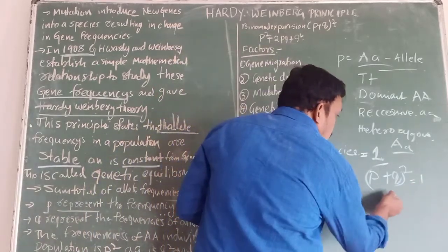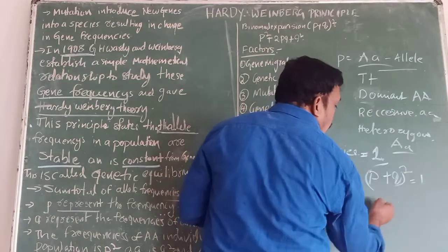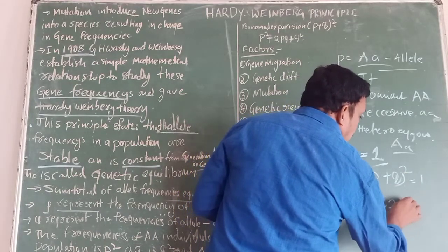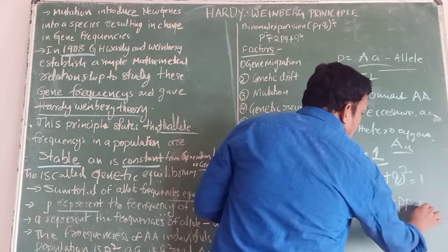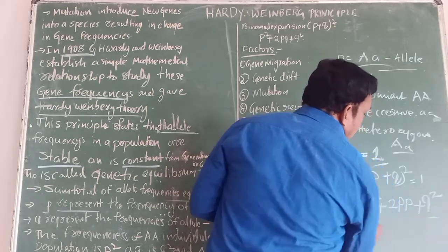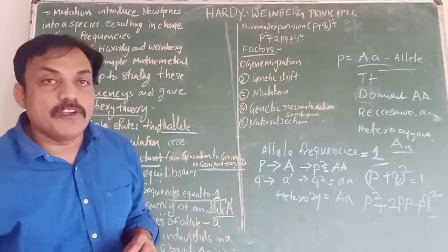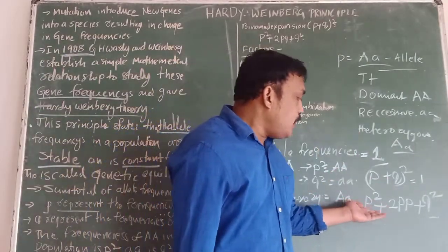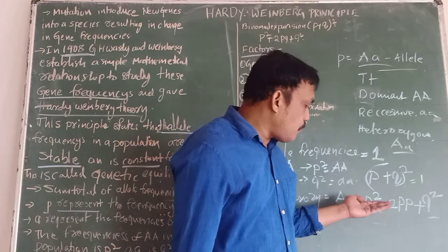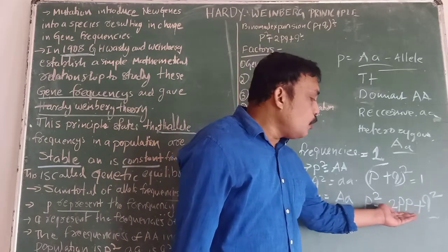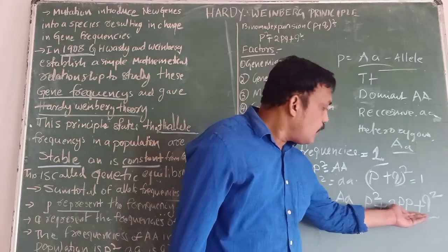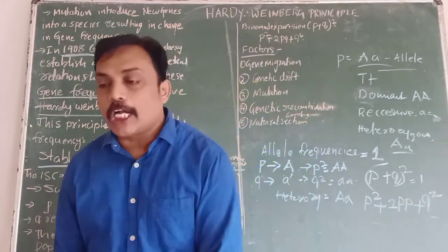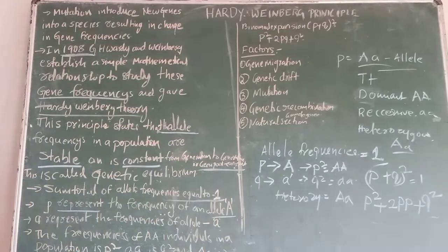The expansion of (P + Q) squared equals P squared plus 2PQ plus Q squared. That means P squared allele frequencies, 2PQ allele frequencies, and Q squared allele frequencies are always constant and equal.